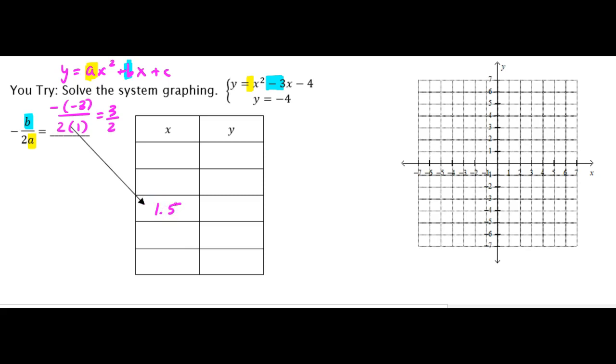Now, to fill out the rest of our table, we're going to count down two numbers and count up two numbers, but we're only going to use whole numbers. So if I counted down from 1.5, I would count to 1 and then 0, and then if I counted up, it would be 2 and 3.